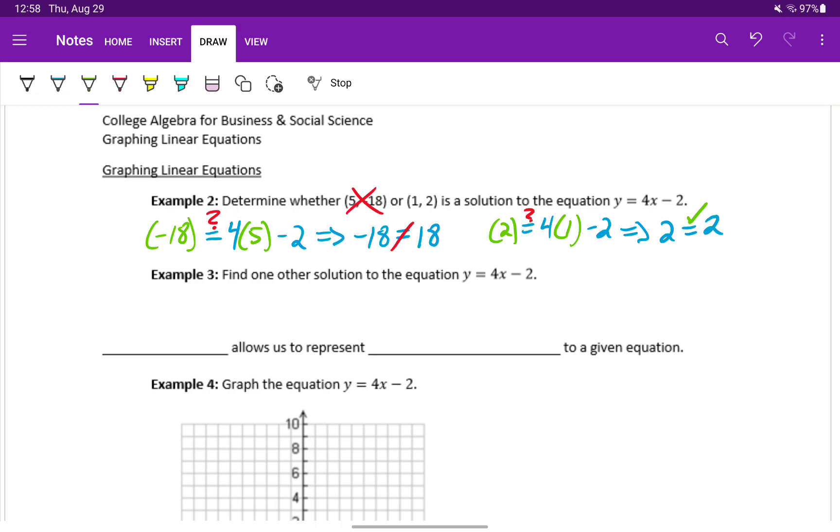In example 3, we want to find one other solution to that same equation. In example 2, we were given two coordinate pairs to test. Now what we want to do is just plug in a value for x, anything besides 1, since we already know its coordinate pair. So instead of 1, let's plug in 2.